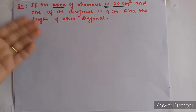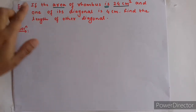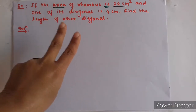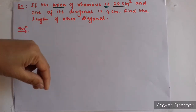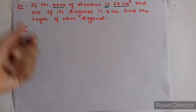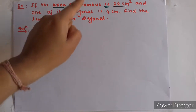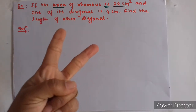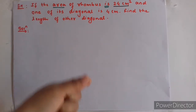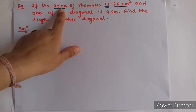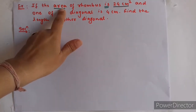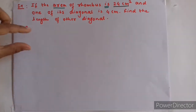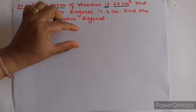We need to find the length of the other diagonal. We know there are two formulas for the area of a rhombus. Since both the area and one diagonal are given and we need to find the other diagonal, we will again use the formula: area of rhombus = half into D1 into D2.